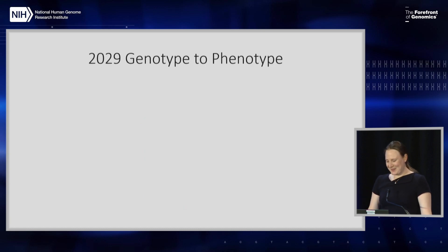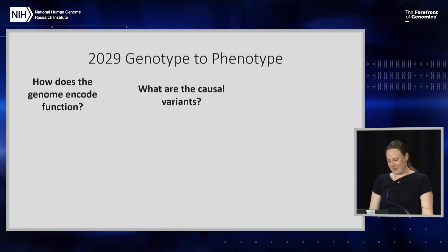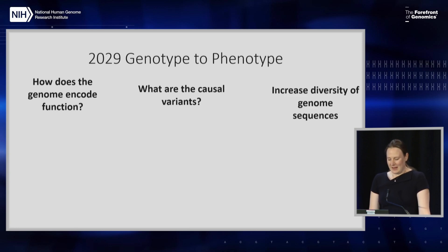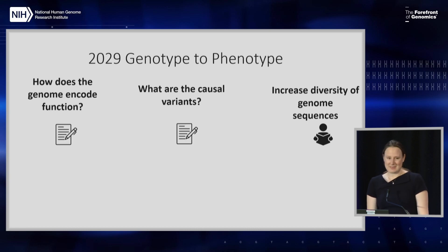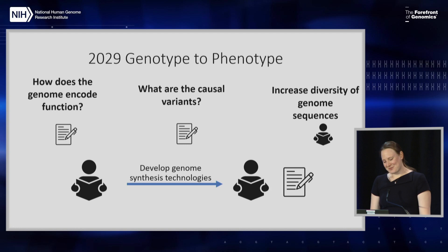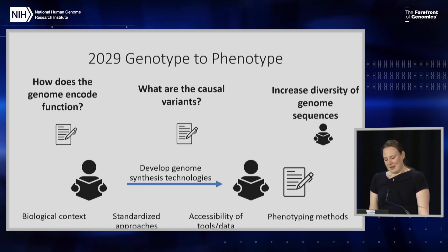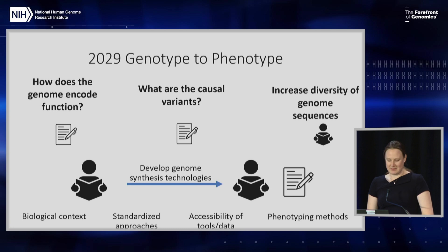In conclusion, my hope for 2029 is that we address three key questions: how does the genome encode function, what are the causal variants, and how do we increase genome diversity. To increase diversity we can read more genomes, but to address the first two questions about function and causal variants, we need to be writing and manipulating genomes at massive scale. That requires developing novel technologies and harnessing existing ones better, within a biologically relevant context, with standardized approaches, accessibility of tools and data to the entire community, and careful thinking about phenotypic methods. Thank you.